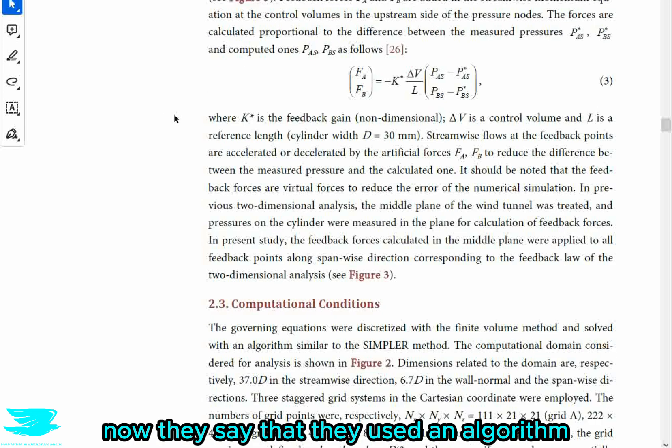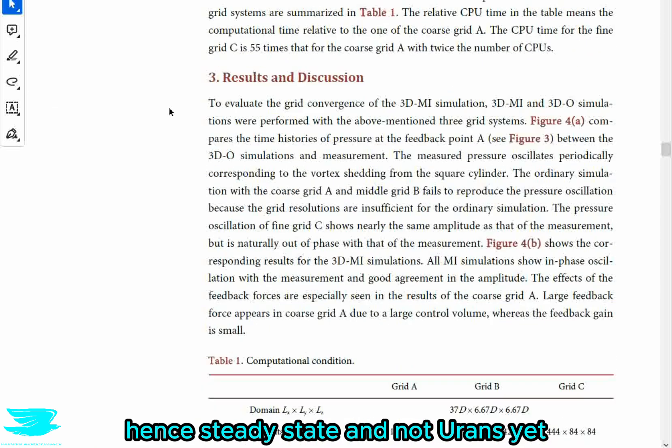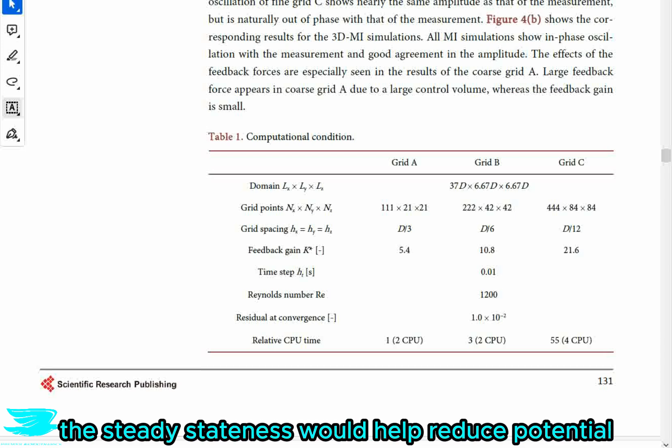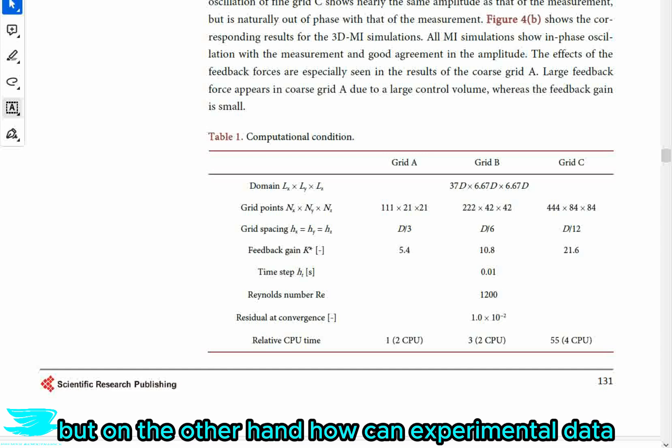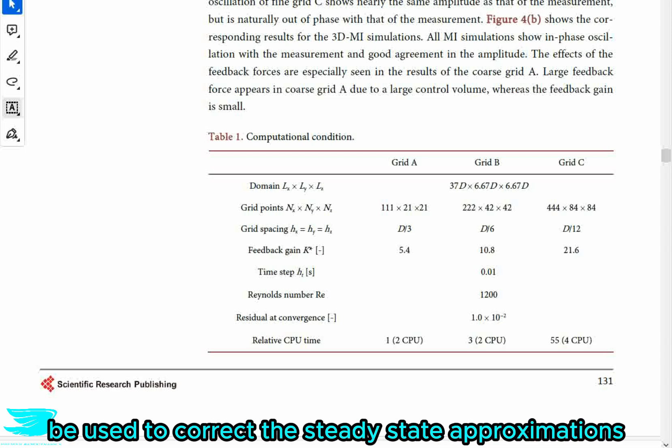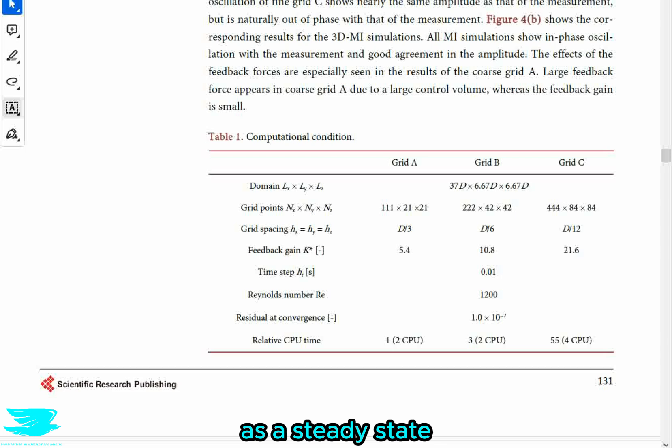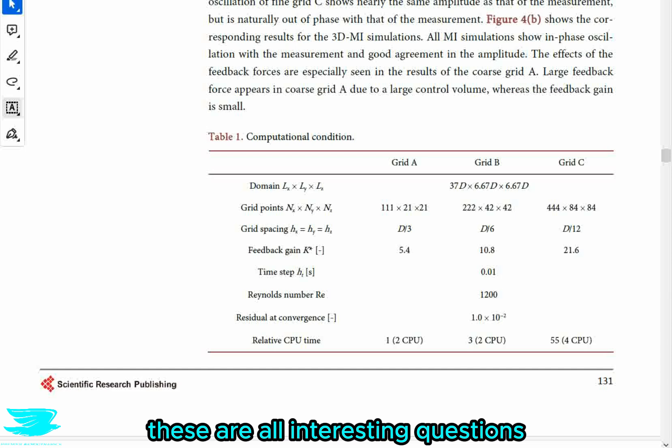Now, they say that they used an algorithm similar to the simpler method. So I guess that means that their CFD was RANS, hence steady state and not transient. So this is really interesting. And because on the one hand, the steady state-ness would help reduce potential overcorrections because it is more stable to begin with. But on the other hand, how can experimental data that is based on transient processes be used to correct the steady state approximation? That would always lead to the correcting forces being required as a steady state CFD would never align with the experimental data.